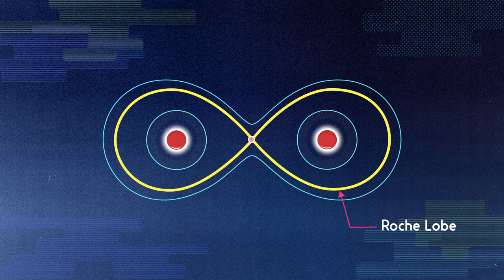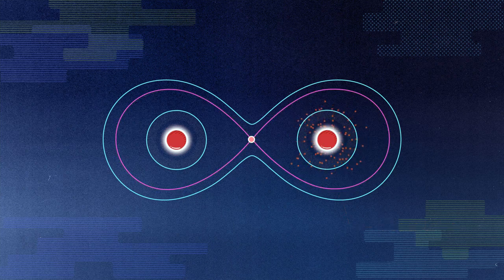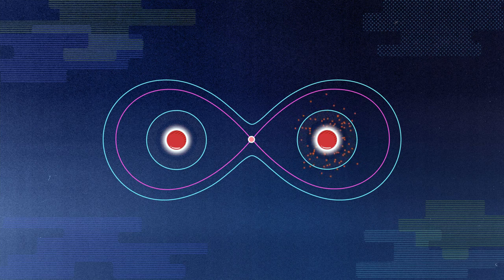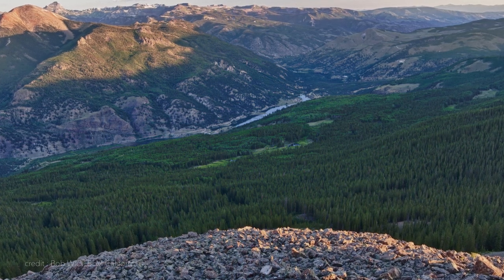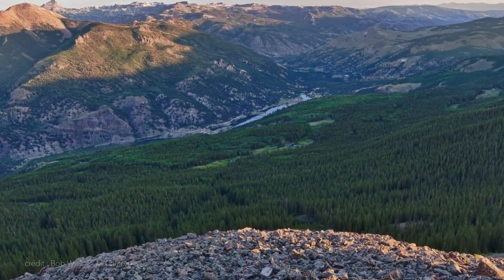It is the Roche lobe for the star it contains. Any material that is inside the lobe is gravitationally bound to that star. You can think about gravitational lobes like two lakes occupying adjacent valleys, separated by mountains.